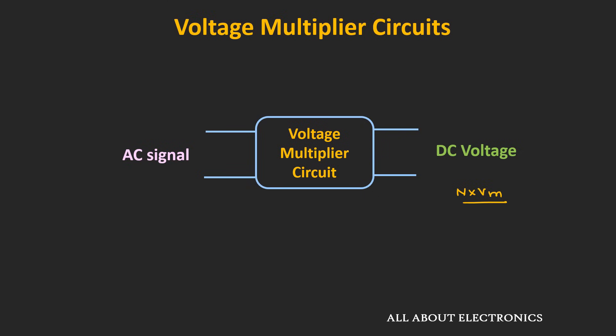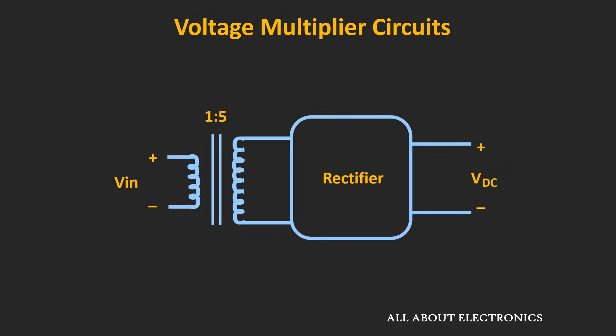You might ask: what is the need of this multiplier circuit when we can increase the voltage just by using a step-up transformer and a rectifier circuit? If you use a step-up transformer with a rectifier, you can also multiply the input signal, but the size and cost of the circuit will increase. That is why in many applications, voltage multiplier circuits are used instead of step-up transformers.